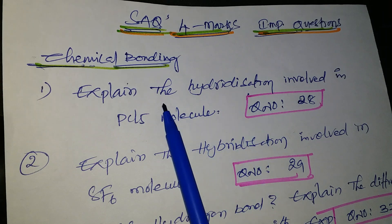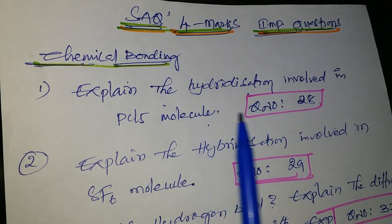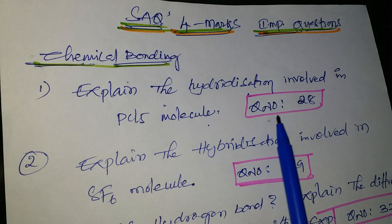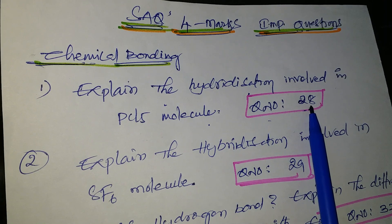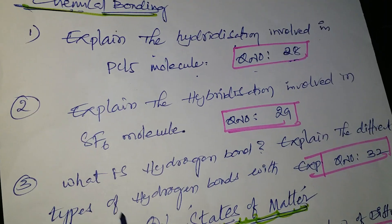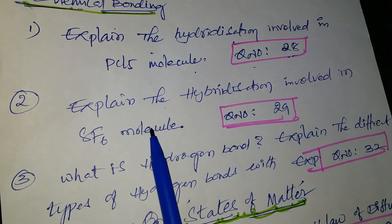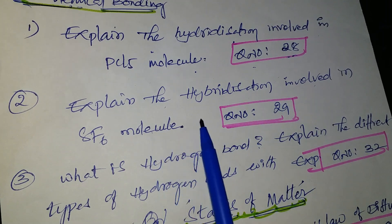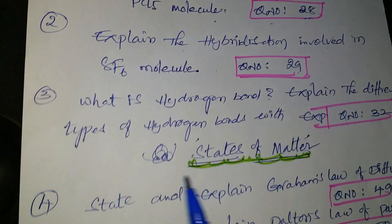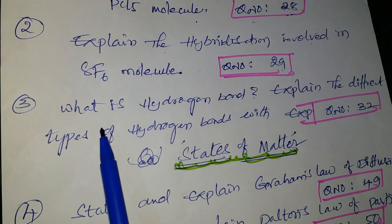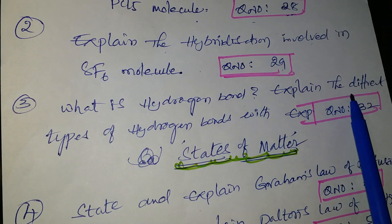...involved in PCl5 molecule — that is question number 28 from the Telugu academic textbook. The second question is: explain the hybridization involved in SF6 molecule — question number 29.